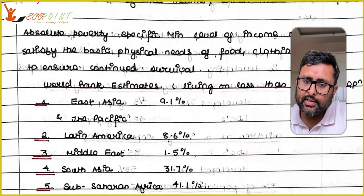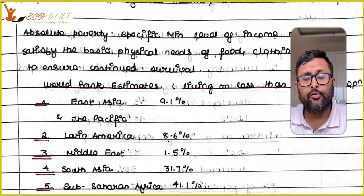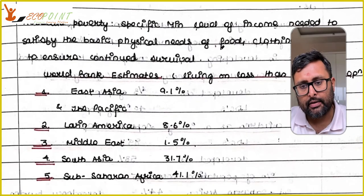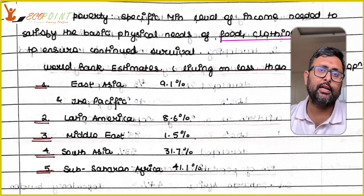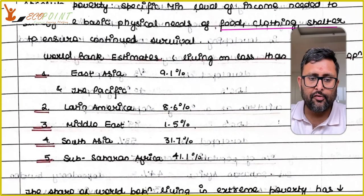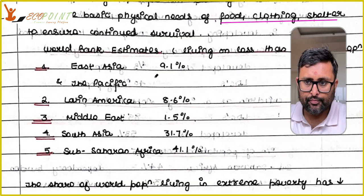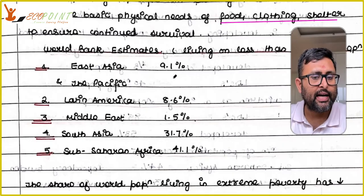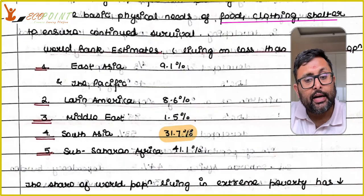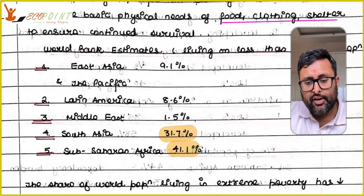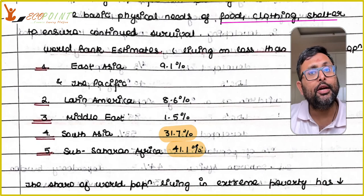Absolute poverty is the minimum level of income you require just to have basic clothing, shelter, and food. If you do not even have this much, the person is absolutely poor. The World Bank estimates the percentage of people living on less than $1 a day: East Asia and Pacific 9.1%, Latin America 8.6%, Middle East 1.5%, South Asia 31.7%, and Sub-Saharan Africa 41.1% — a huge population living at less than $1 a day.